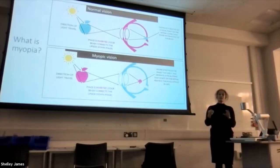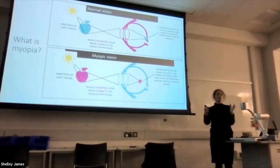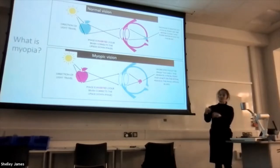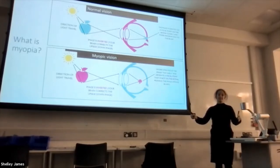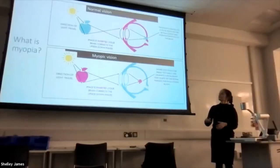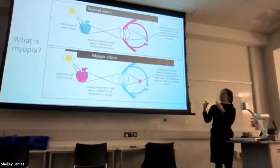In myopia, either the cornea and lens power is too great so that light is focused in front of the retina rather than on it, or more commonly, the length of the eye is too great — the eyeball has simply grown too large — and so again, light is focused in front of the retina and not directly on it.